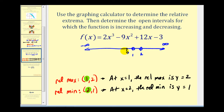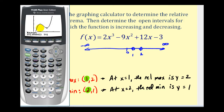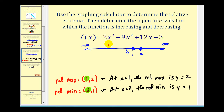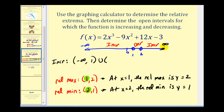Looking at the function one more time: to the left of positive one the function is increasing, from one to two it's decreasing, and from two to infinity it's increasing again. So the function is increasing on the interval from negative infinity to positive one and from two to infinity, and it's decreasing on the open interval from one to two.